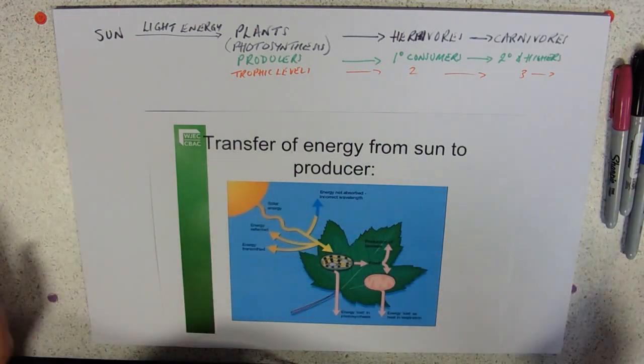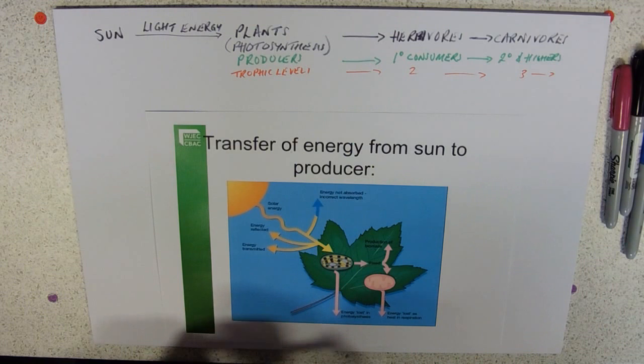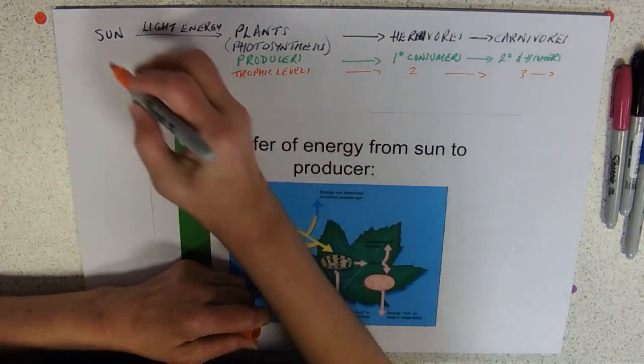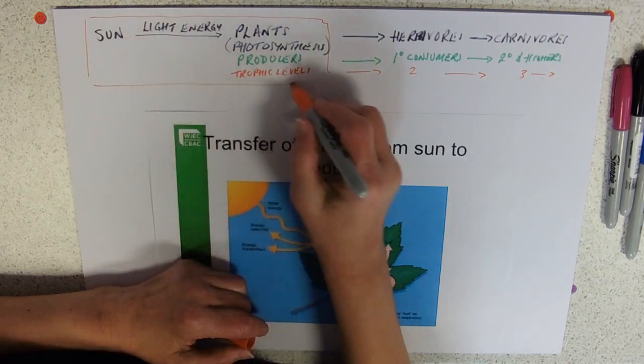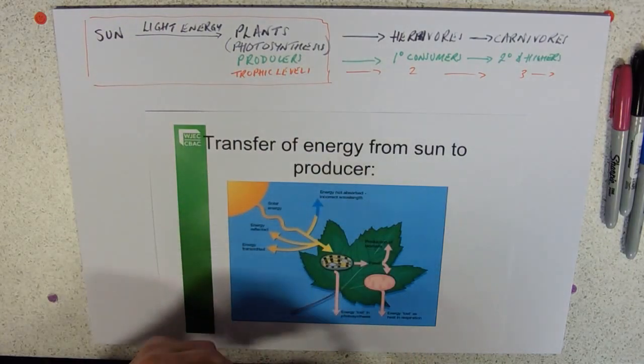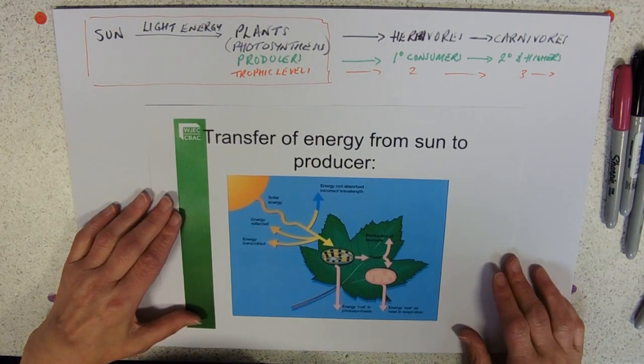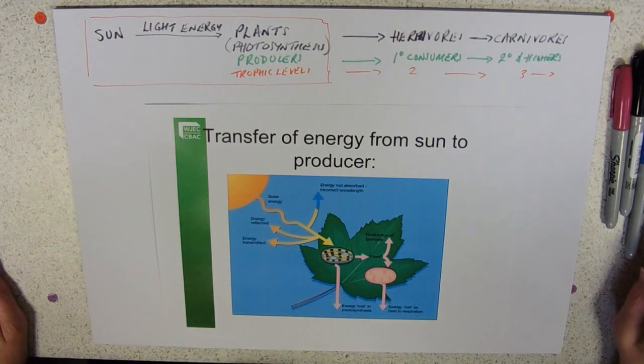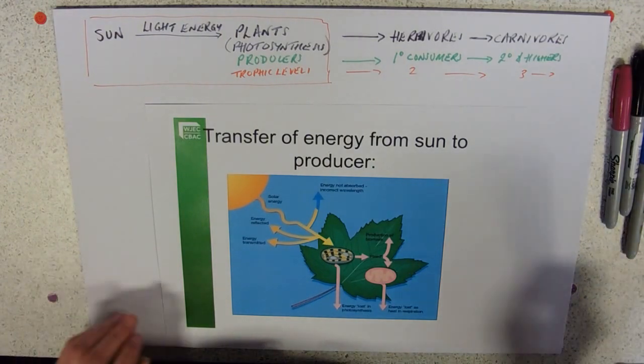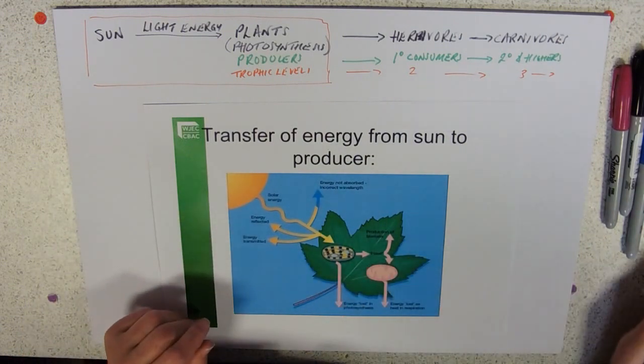We will talk a little bit more about food chains and losses of energy. But let's just deal with this first transfer, going from the sun into the producers. So this is the diagram from the booklet. Apologies to whoever owns the copyright on that.